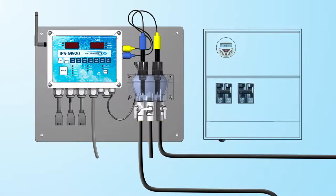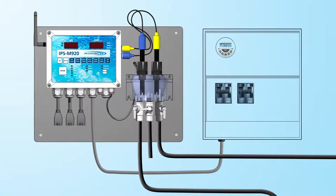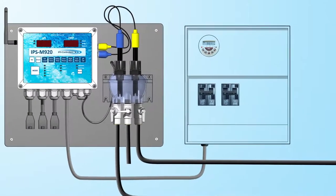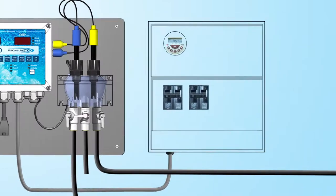To power the unit, the recommended method is to have a professional electrician wire the unit into the time clock on the load side of the circulation pump circuit. This will allow the unit to be turned on only when the system turns on.